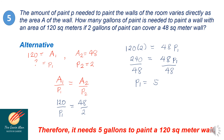That is our discussion for today. To summarize: in order to find the equation of direct variation, first find the constant of variation using k equals y over x. Then, after finding the value of the constant, substitute it into the equation of your direct variation. Again, this is Teacher Onindy Guzman. Thank you, and don't forget to subscribe to my channel so that you will be notified of my new videos.